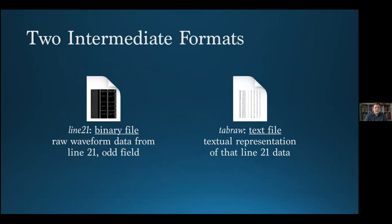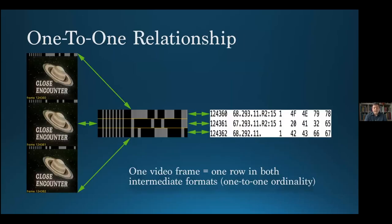The practical foundation of this approach is found in its two intermediate formats: a binary file called Line 21, and a text file called Tab Raw. The Line 21 file is comprised entirely of a single video line — line 21 — extracted from every source frame, while the Tab Raw file is the textual representation of the data extracted from those same lines. Each row of data in these formats has a direct one-to-one ordinal relationship with the source video frames they were derived from.